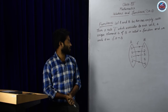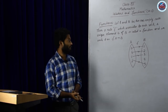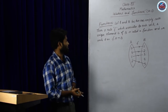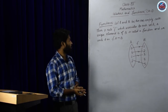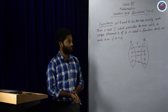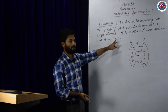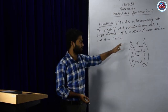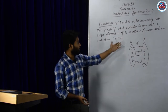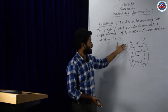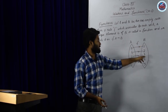So, what is a function? Let A and B be two non-empty sets. Then a rule F, which associates to each X belonging to A a unique element of B, is called a function, and we write it as F is a function from A to B. Simply, it means that every element of the set A must be connected to at least one element of the set B.